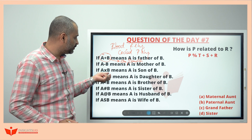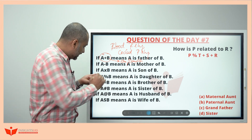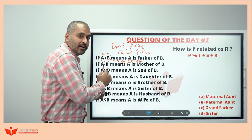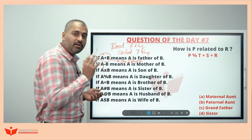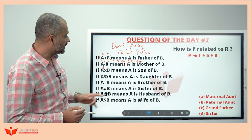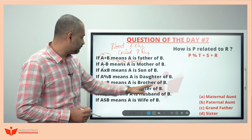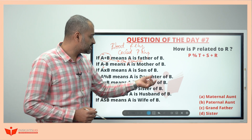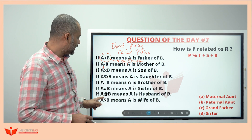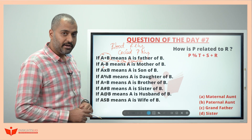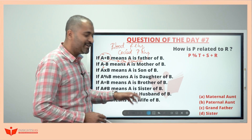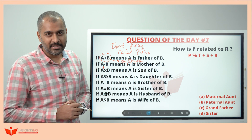Similarly, A into B means A is son of B — A is the son here, so B can be either mother or father. A percentage B means A is daughter of B. A equal to B means A is brother of B. A hashtag B means A is sister of B. A at-the-rate B means A is husband of B. A dollar B means A is wife of B.